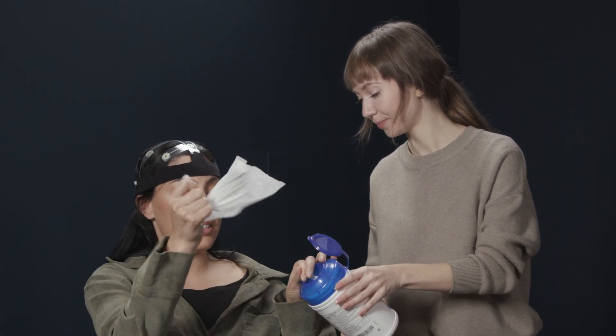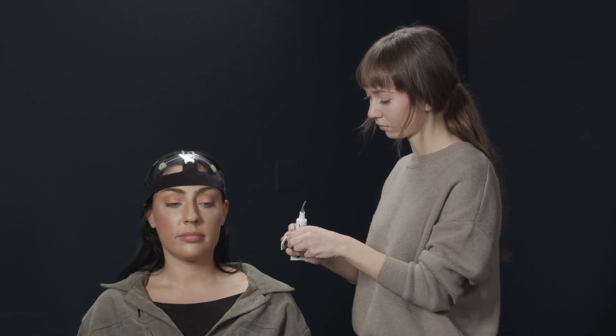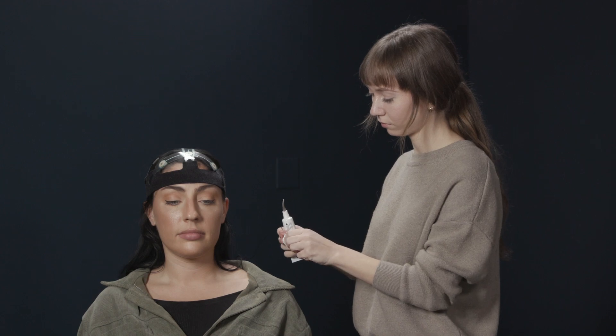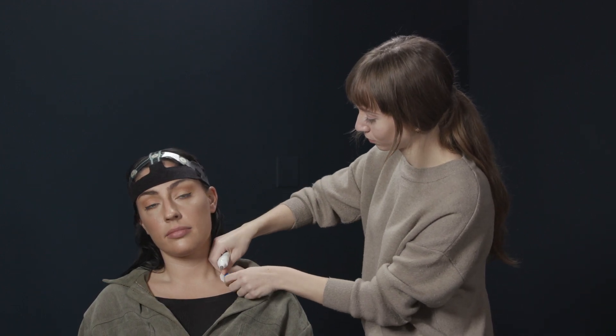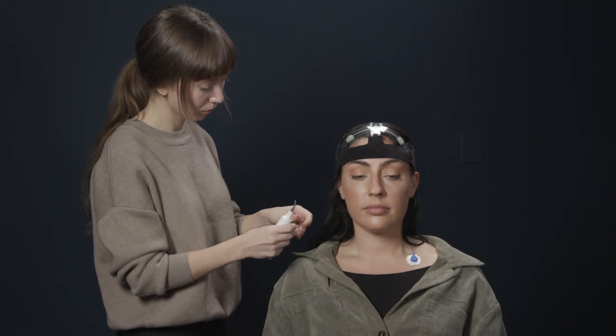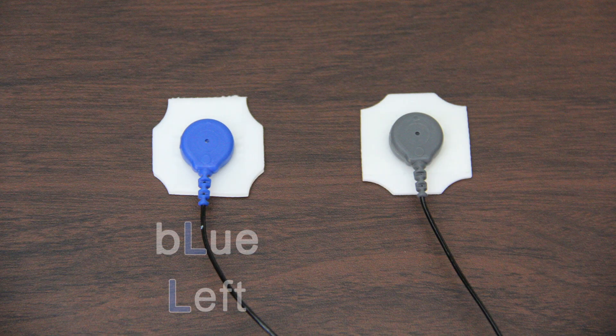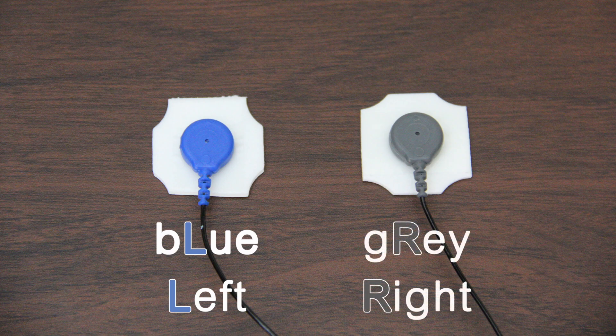If you are using the ECG leads, ask the subject to wipe their clavicle or collarbone on their left and right side with an alcohol swab. Allow the skin to dry. Snap adhesive electrodes to the end of the ECG lead cables. Beginning with the lead connector colored blue, attach the electrode to the subject's left clavicle or collarbone. Then, with the lead connector colored gray, attach the electrode to the subject's right clavicle. Remember, both blue and left have the letter L for the left side. Likewise, both gray and right have the letter R for the right side.